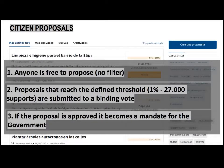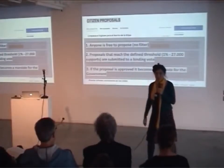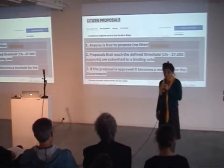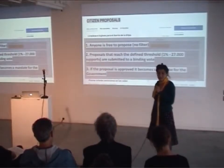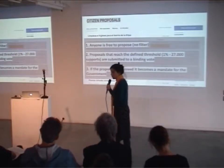Why does it give more power to people? Because any citizen can propose, and if it gets 27,000 supports — meaning 1% of the population of Madrid's support through the digital platform — it goes to a referendum. And if the referendum says yes, it's binding for the government to implement it.